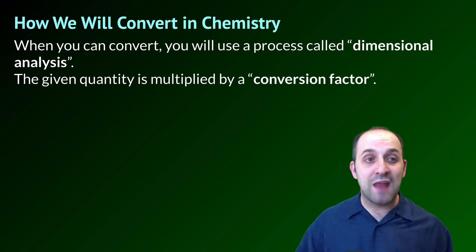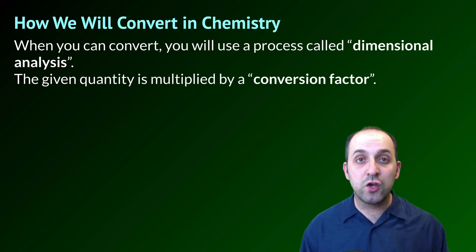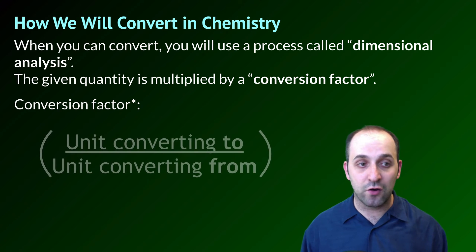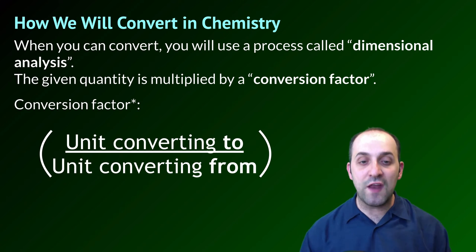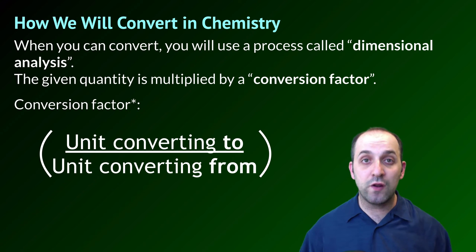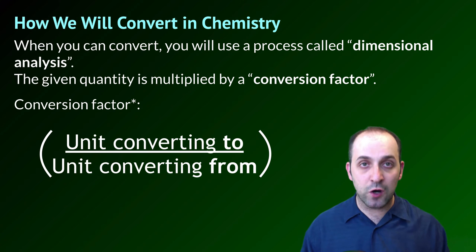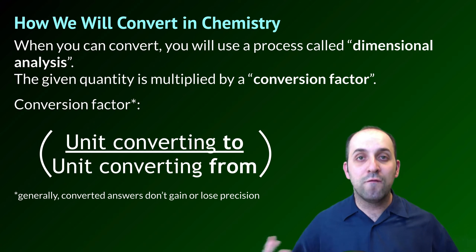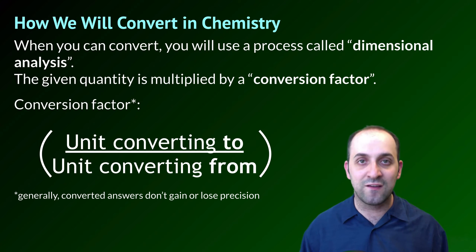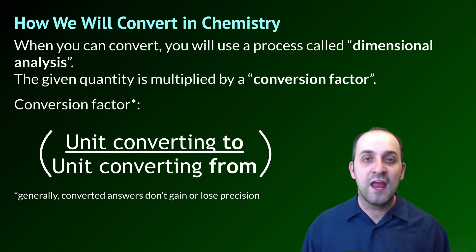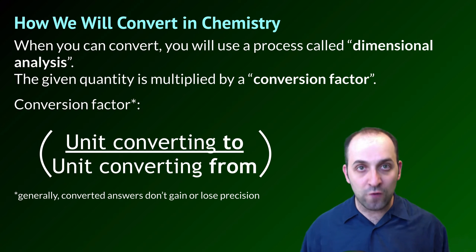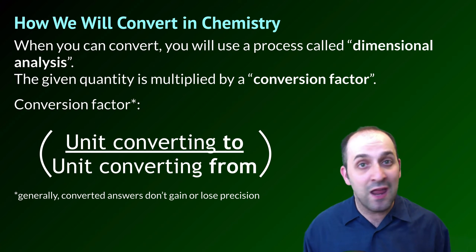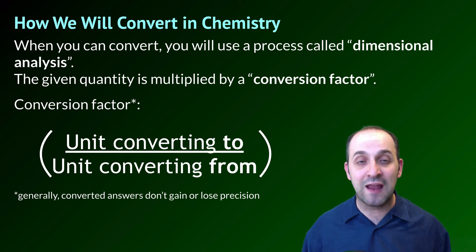We are always going to use a process called dimensional analysis when we convert in chemistry. We're going to multiply any given quantity by a conversion factor. You put the unit you're converting from on the bottom and the unit you're converting to on the top, then multiply through to get the units you're looking to finish with. For significant figures, conversion factors are generally treated as having infinite significant figures and infinite precision. That's not strictly true, but as a rule of thumb in this course, it's totally okay to do that.